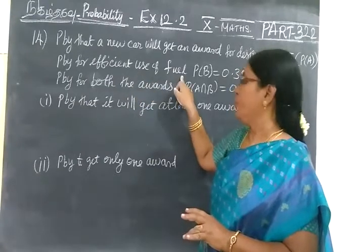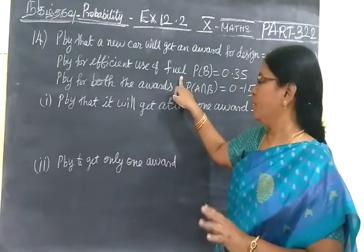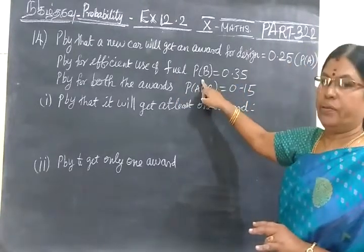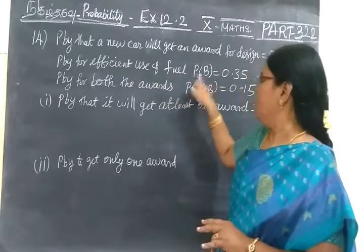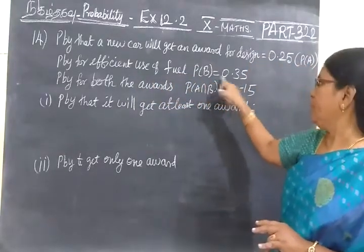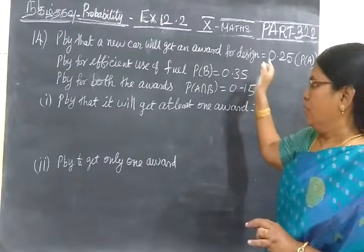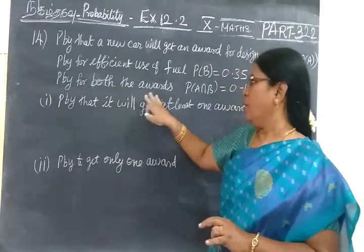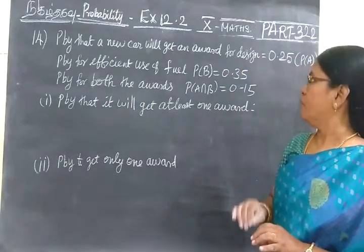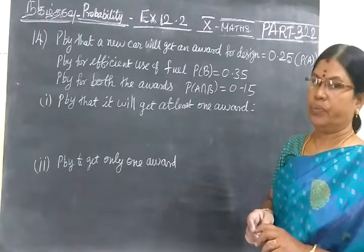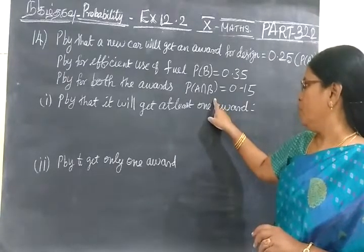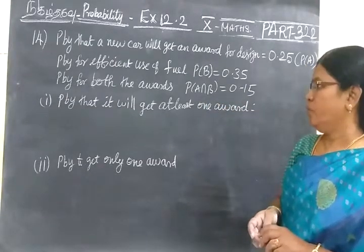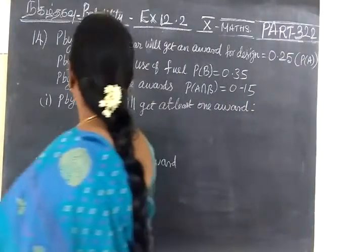Then for use of fuel, not only for design, they are giving award for fuel. Probability is 0.35, that means P(B) = 0.35. And it is given one more award - probability that a car gets both awards, that is for design as well as use of fuel. If it is best, they are giving both awards. That is P(A ∩ B) = 0.15.